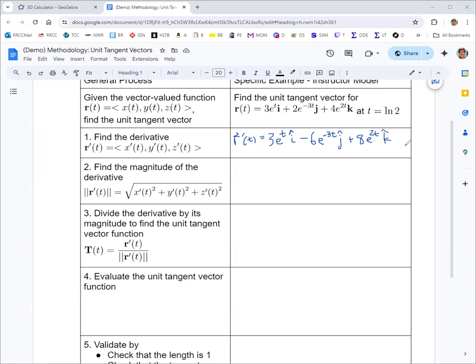Move on to step two where we want to find the magnitude of the derivative. So the magnitude of a vector is the square root of the sum of the squares of the components. And so it's no different here. Same notation with the double vertical bars. And then we've got a big square root. And then we'll square each of these. Now, when you square a product, you square each of the factors. So we'll square the 3, we'll square e to the t. When you square these exponentials, you multiply the exponent by 2. You notice the i, j, and k disappear because this is no longer a vector. This is the magnitude of a vector, and so it's a scalar.